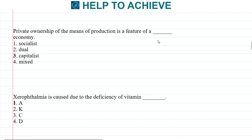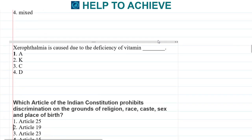Private ownership of means of production is a feature of which economy? In private ownership, it means it is economy-oriented and always looks for benefits or profits. These types of economies are nothing but capitalist. The correct answer is capitalist economy.